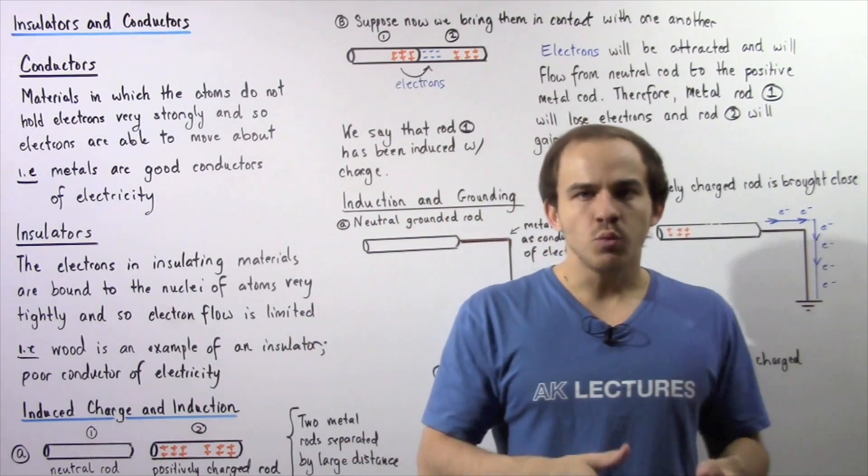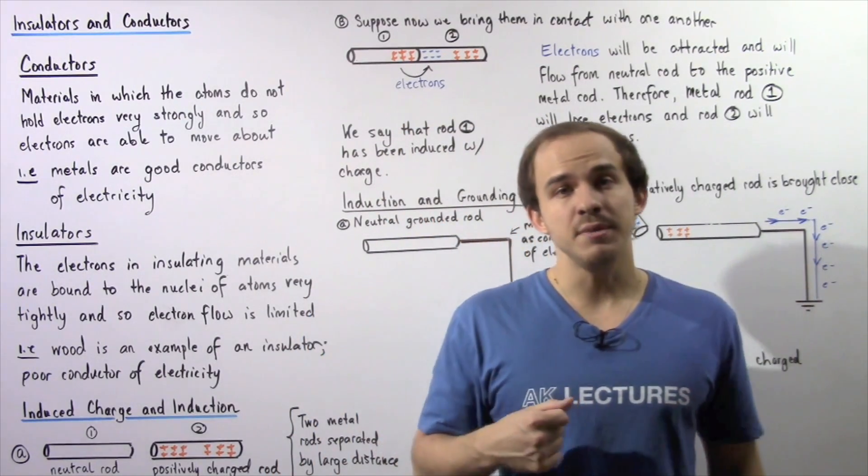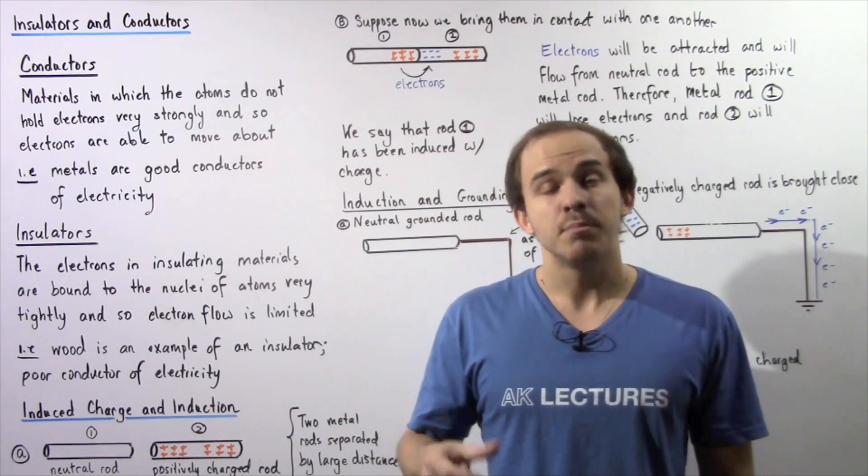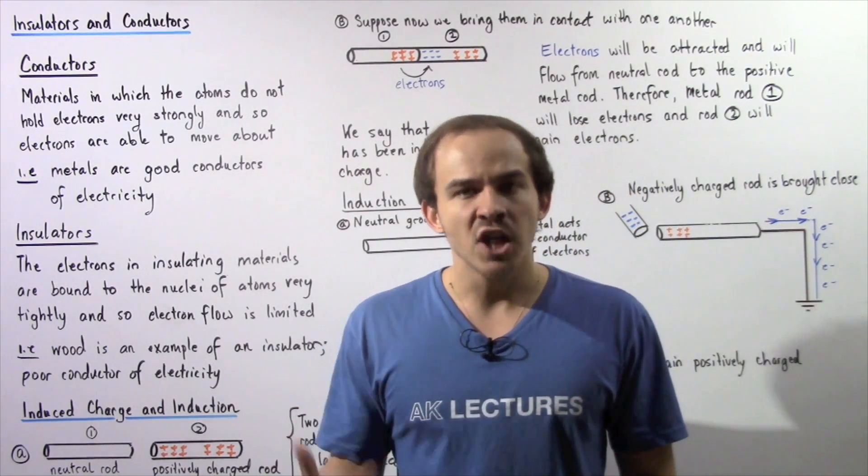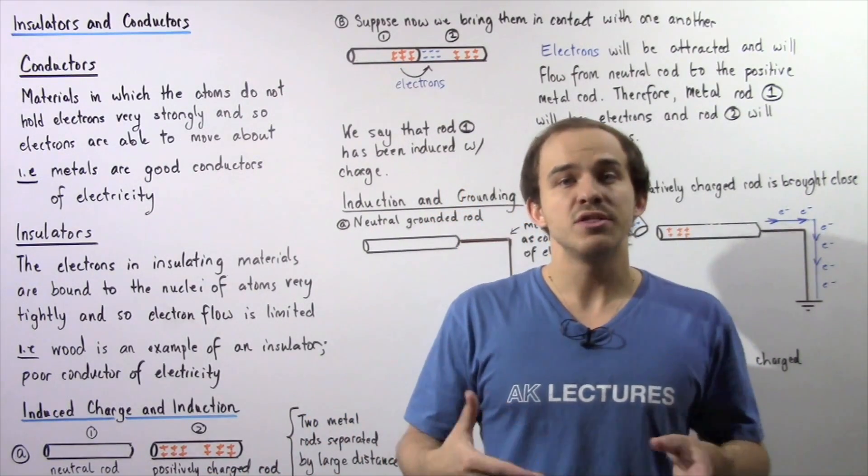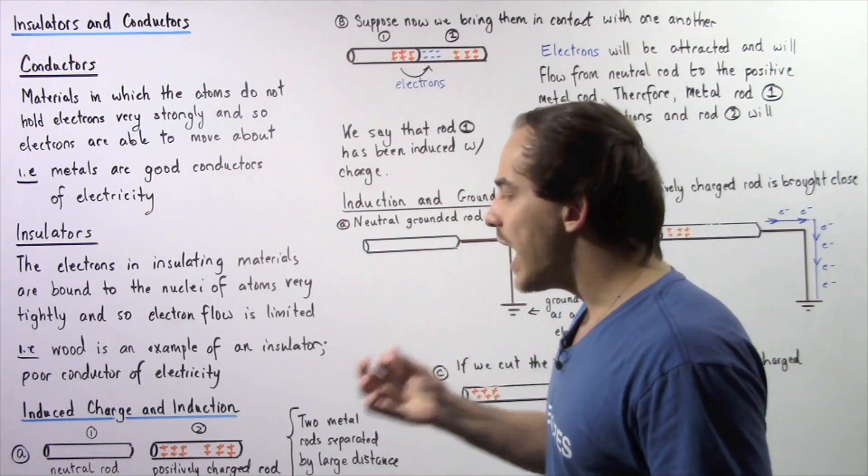In the same way that we have conservation of energy, we also have conservation of electric charge. That basically means electric charge cannot be destroyed nor can it be created, but electric charge can flow from one object to another object in the same way that energy can flow from one area to another area.